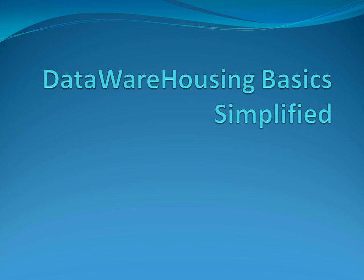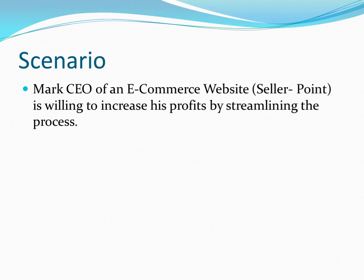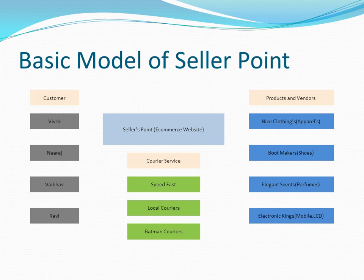We will be explaining the entire concept with the help of a simple example. Mark, who is a CEO of an e-commerce website, is willing to increase his profits by streamlining the process. This is the basic model of SellerPoint. SellerPoint has three components: customer, products, and courier services. Customers can buy products and those products are shipped via courier services. For example, Vivek can buy a shoe from Bootmakers and it will be shipped by Speedfast.